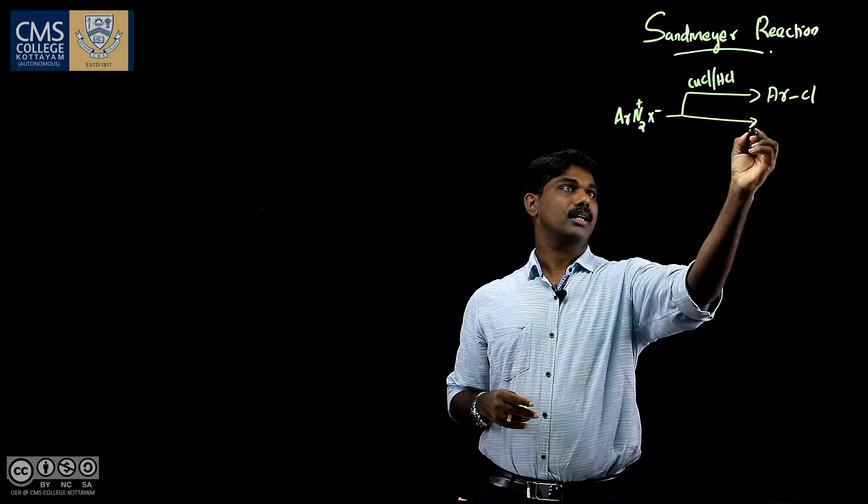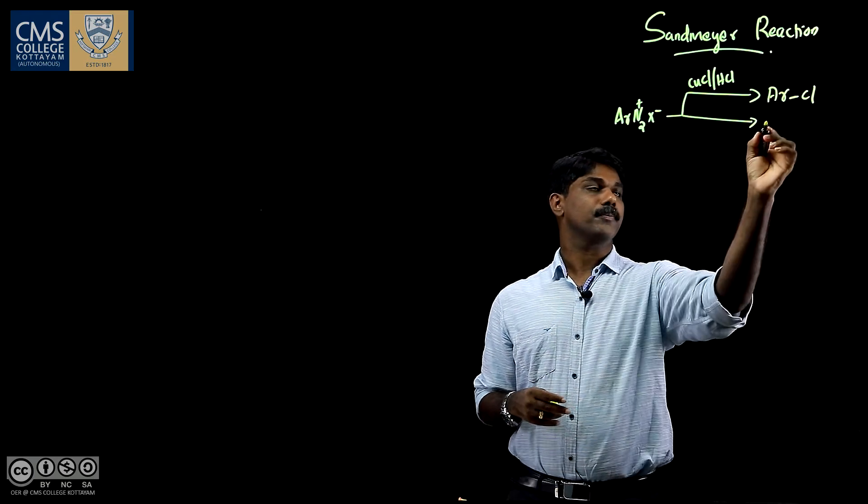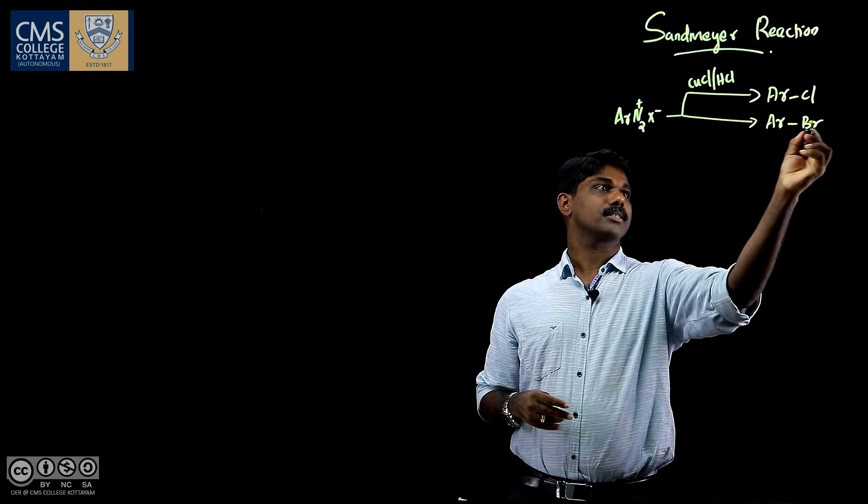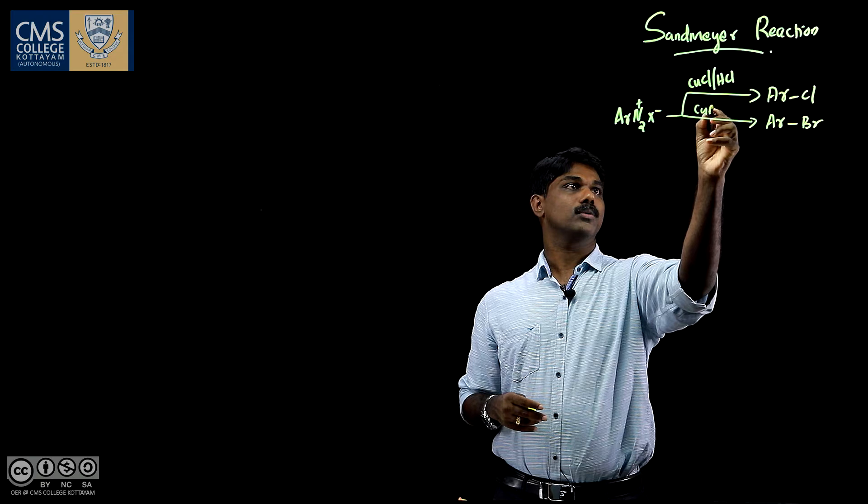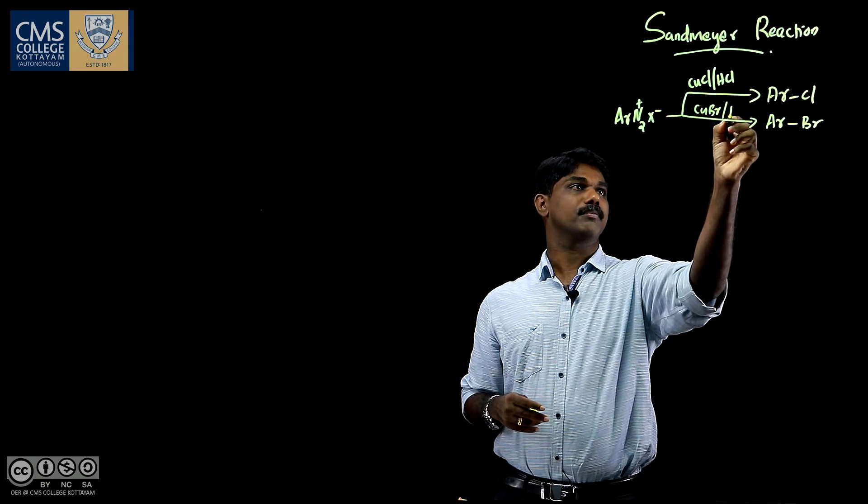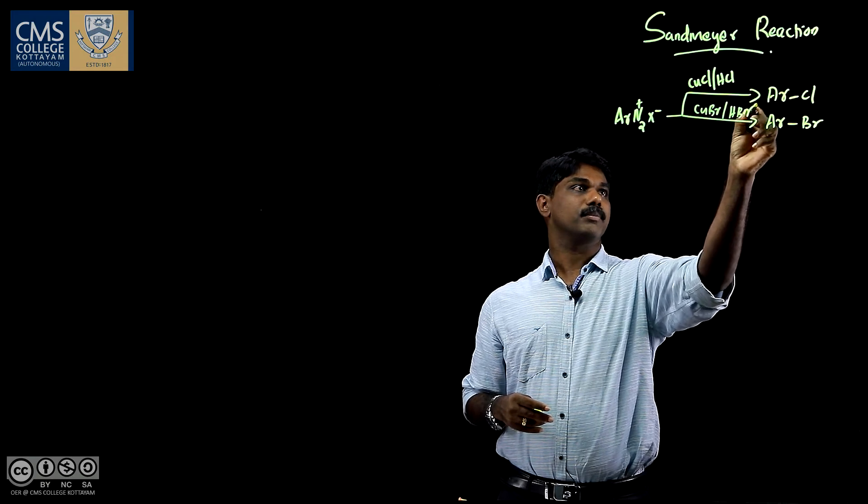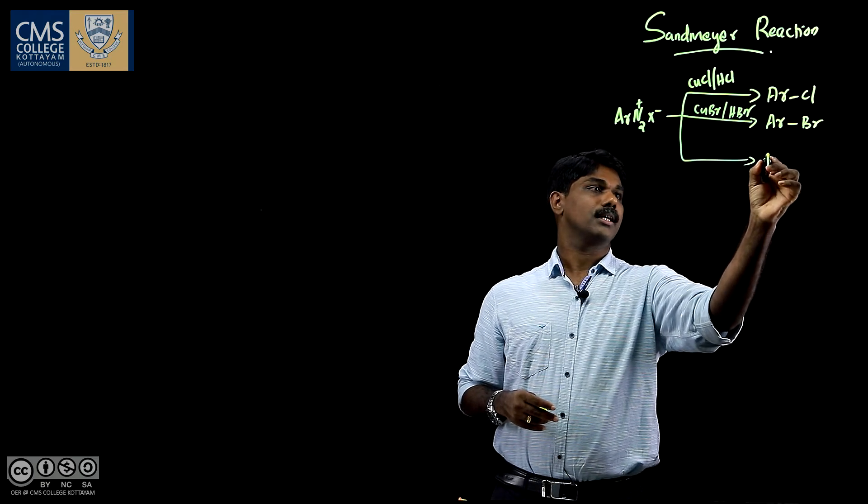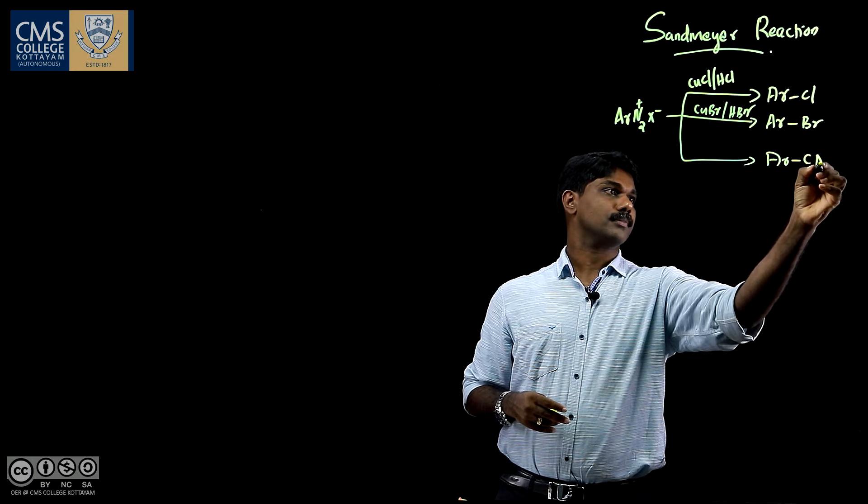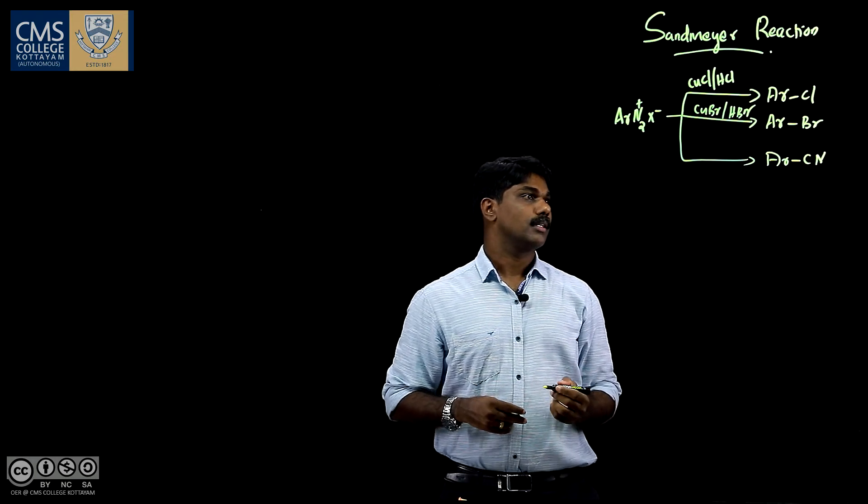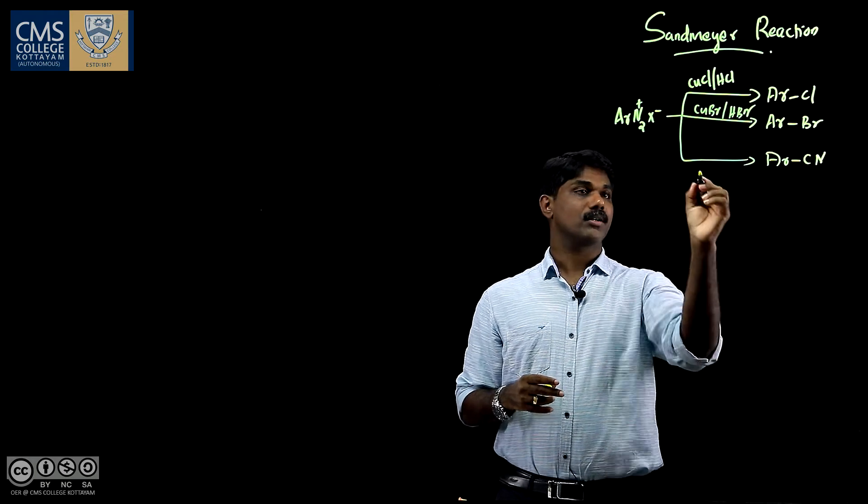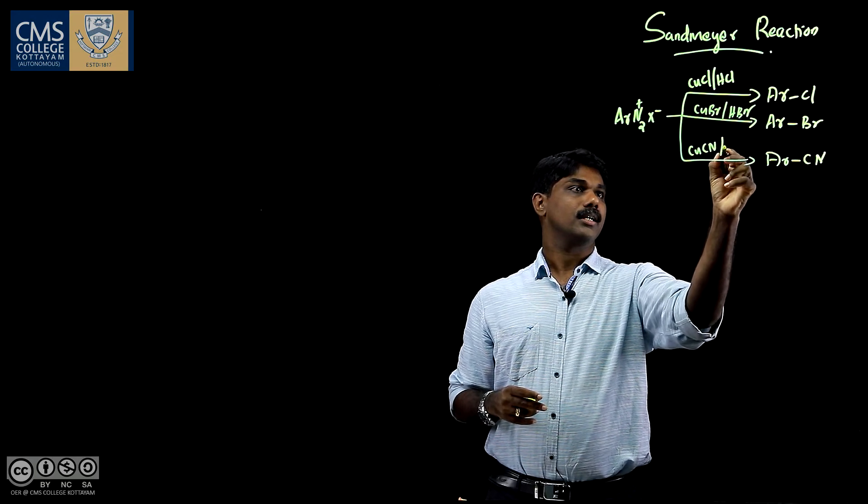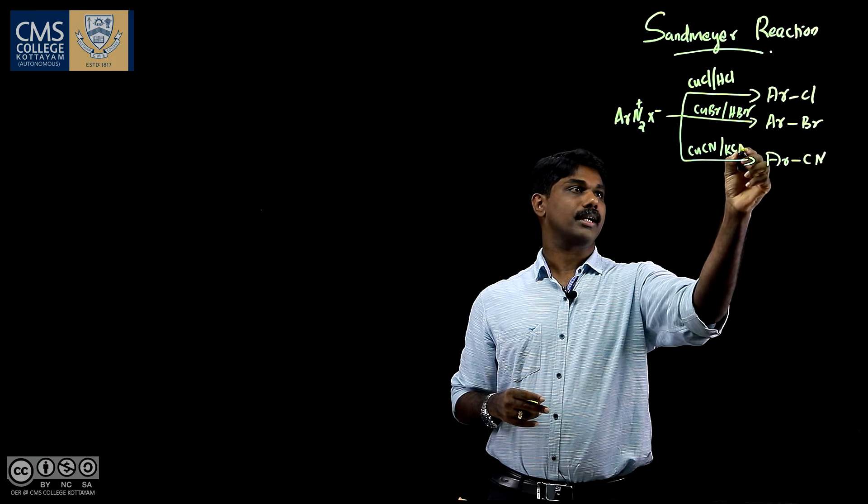You can convert this arine diazonium salt into aryl bromides by using CuBr, cuprous bromide in presence of HBr. You can also convert this arine diazonium salt into aromatic nitrile compounds by reacting with CuCN in presence of KCN.